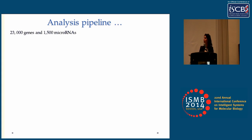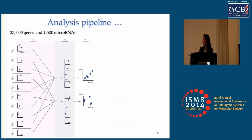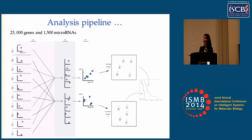We started with 23,000 genes and 1,500 microRNAs, and by using an iterative feature selection algorithm, we divided the patients into two groups. For a microRNA-gene pair to be considered relevant, it had to be significantly correlated in one group and insignificant or opposite in the other. We then applied Kaplan-Meier survival analysis on the groups that emerged from this pipeline, to include only pairs with any association with survival.